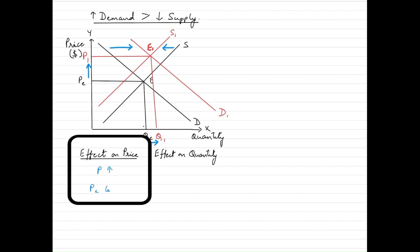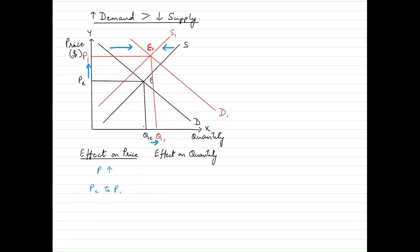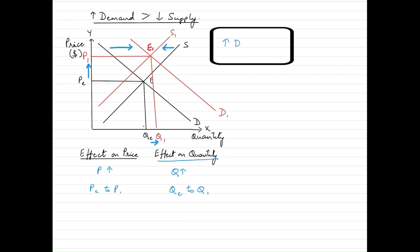On the quantity side, we see that the quantity is increasing from Qe to Q1. This is because a higher price encourages producers to supply more of this commodity, causing the equilibrium quantity to increase from Qe to Q1. This happens because the increase in demand is greater than the decrease in supply.